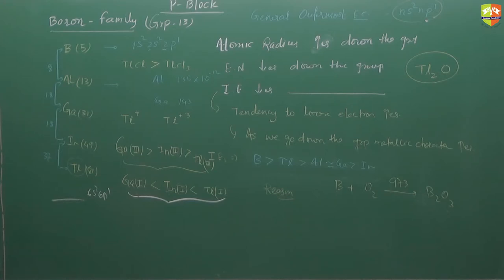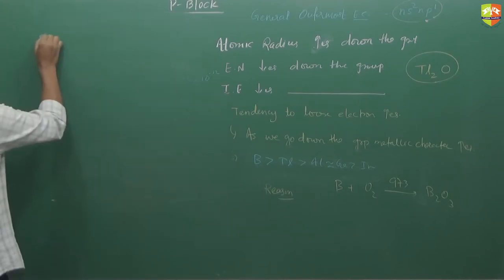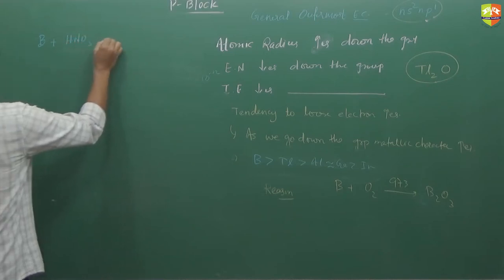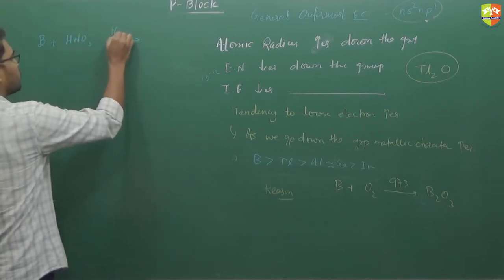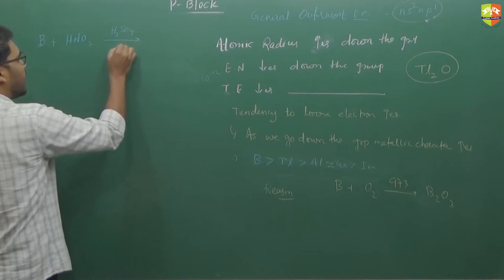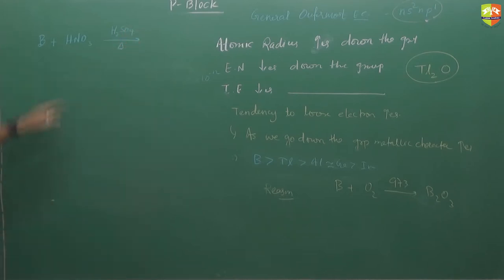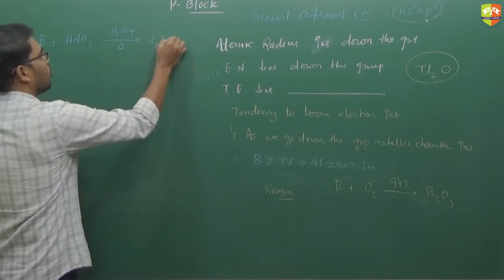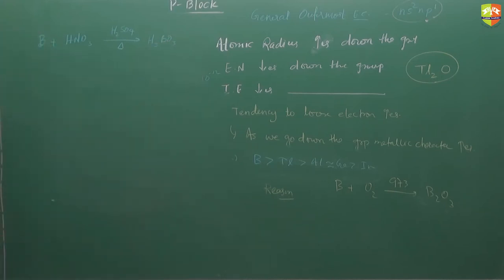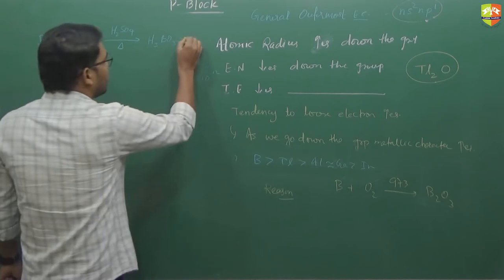Boron with HNO3 in presence of H2SO4, when you heat this at high temperature, generally we will take this ratio as 2 is to 1. It forms H3BO3 boron acid and nitrogen dioxide NO2.